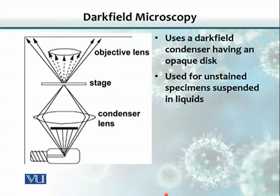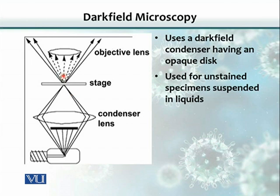In dark field microscopy, it is a variation of the light microscope where the light source is used with a different condenser. It's a special condenser that bends the light and throws it through the specimen in a way that if there is no specimen, the light would not pass into the objective. When the specimen contains the organism, the organism bends the light, and that bent light enters into the objective lens.